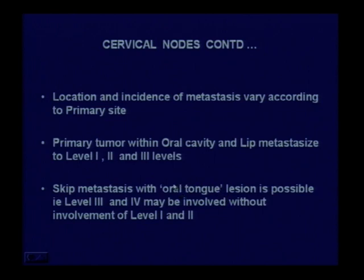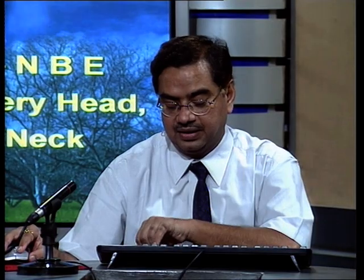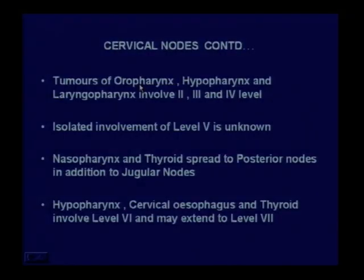One exception: the oral tongue — the anterior two-thirds. If a lesion is present in this area, it is possible to have skip metastasis, meaning level 3 and level 4 involvement without involvement of level 1 and level 2. The metastasis has skipped level 1 and level 2 lymph nodes.